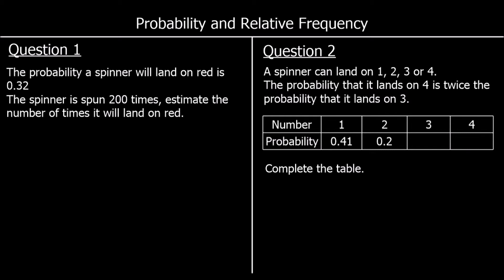Probability and relative frequency. So we've got question one. The probability a spinner will land on red is 0.32. It's spun 200 times. Estimate the number of times it lands on red. So it's like 32% of the time it's going to land on red. So we want 32% of 200, which is the same as 0.32 times 200. So 0.32 times 200 is, if we times it by 100, we get 32, times it by 2, 64. So 64 times.